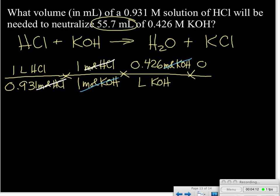We have some more information up here—we have the volume of the potassium hydroxide, that's 55.7 milliliters. If we convert that over to liters, that's 0.0557 liters of KOH. Now that term cancels out, and all our units are cancelled except for the one that we're looking for.